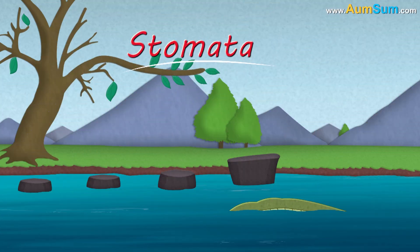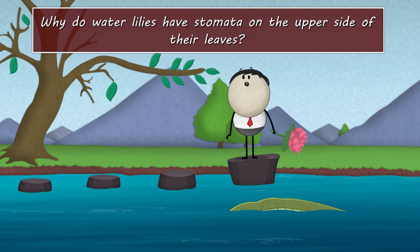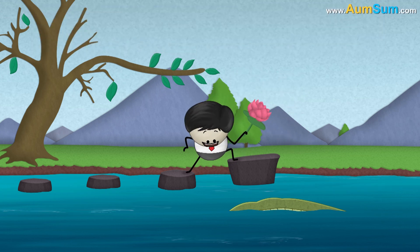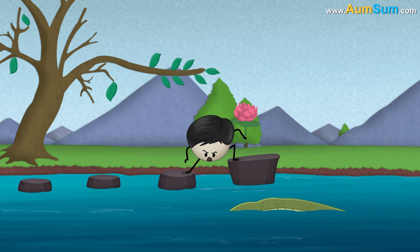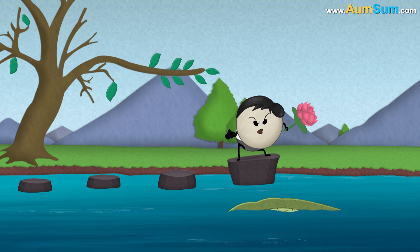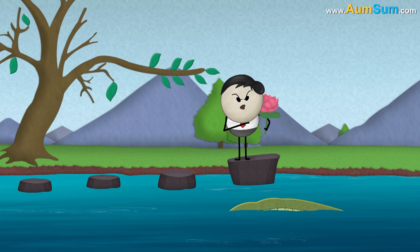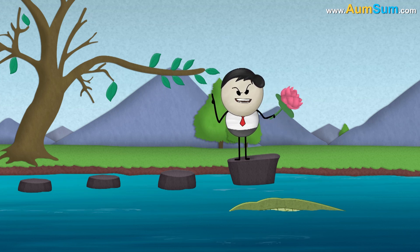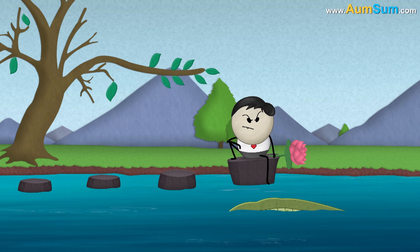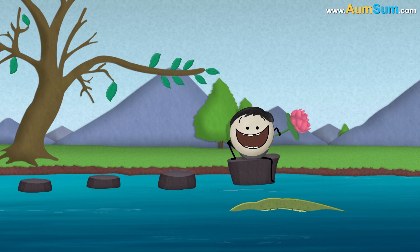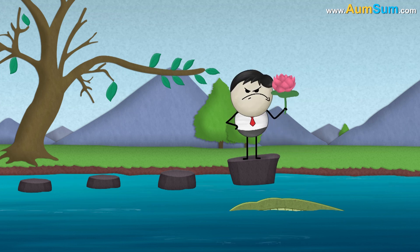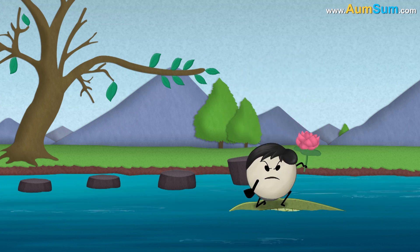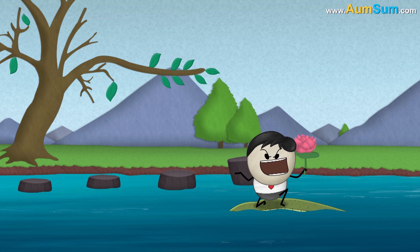Why do water lilies have stomata on the upper side of their leaves? Don't immerse that plant completely in water. You don't have knowledge about anything. Water lily is an aquatic plant, so I'm keeping it totally underwater. Yes, you are right, it is an aquatic plant, but it is not an underwater plant — its leaves float on water. Don't lie to me, how can leaves float?